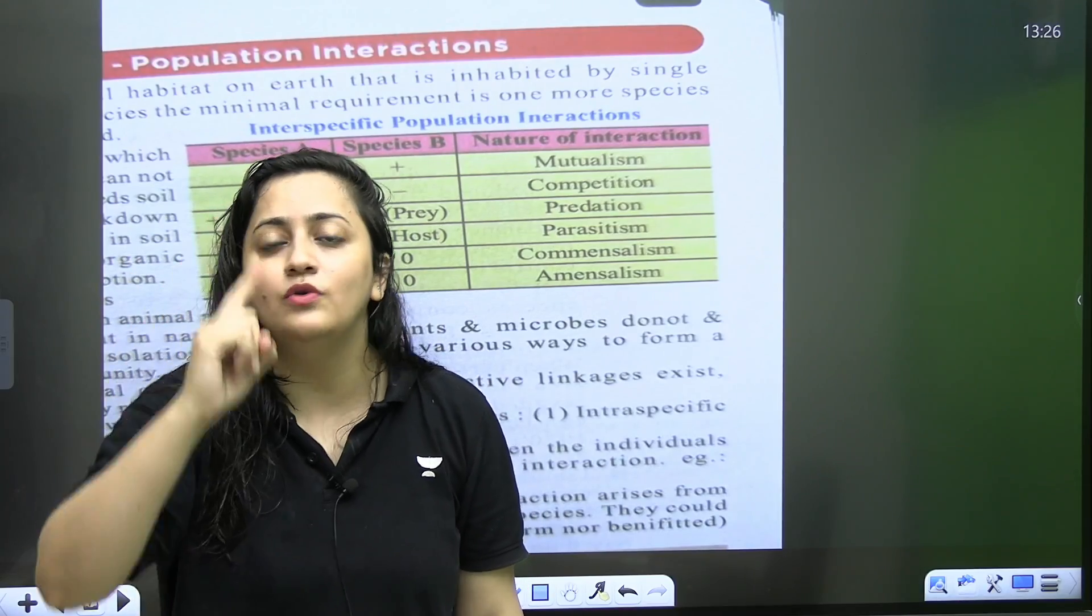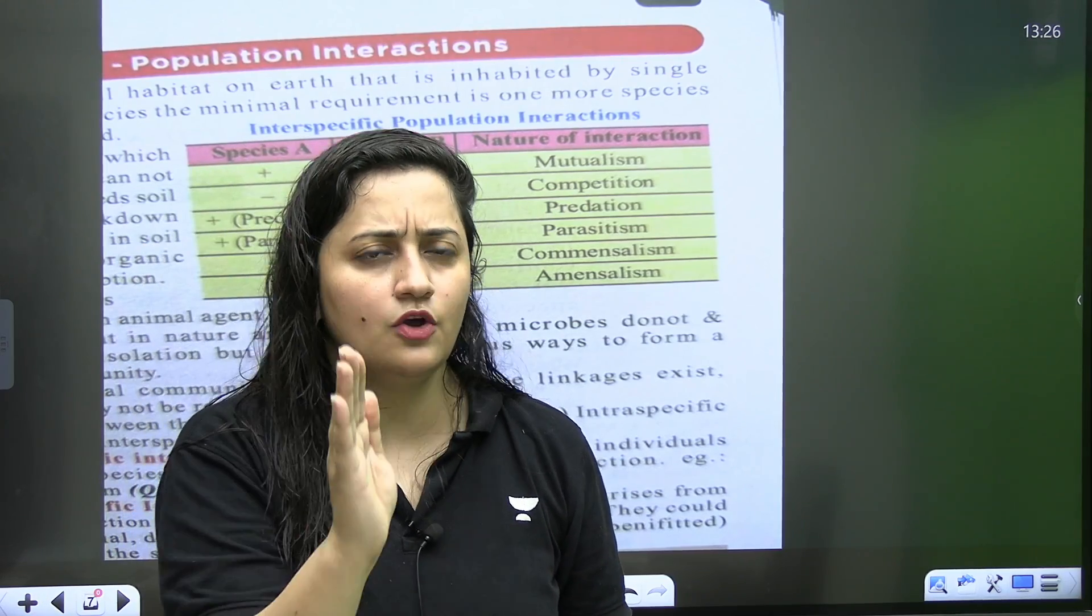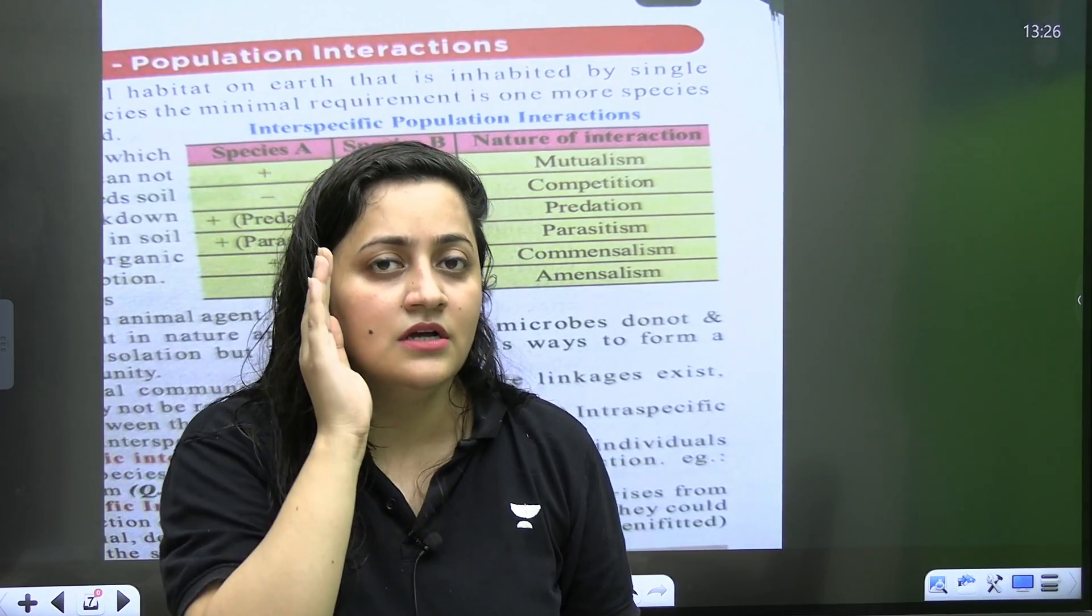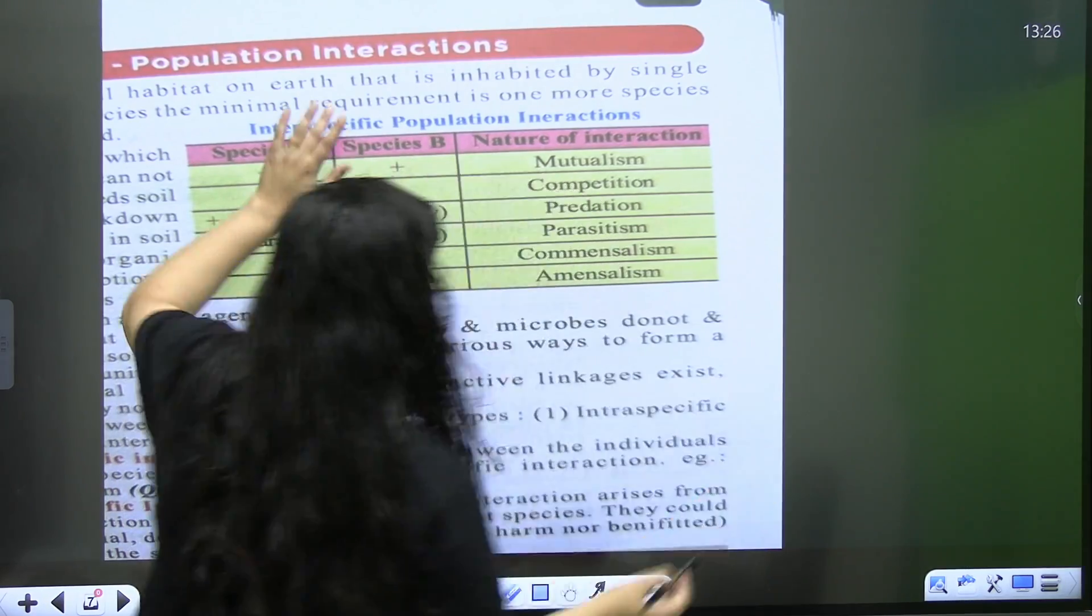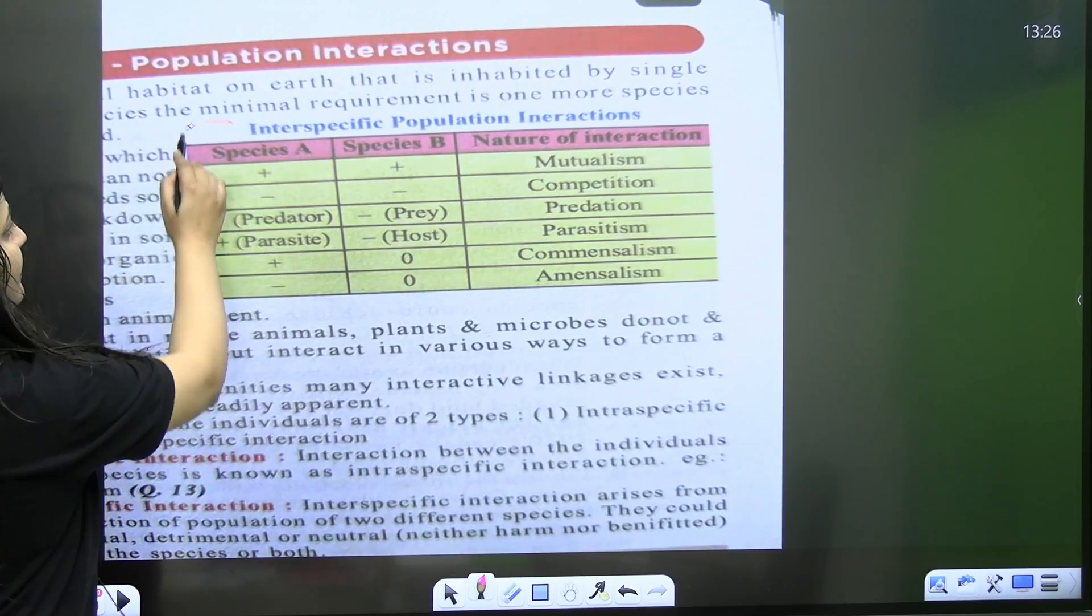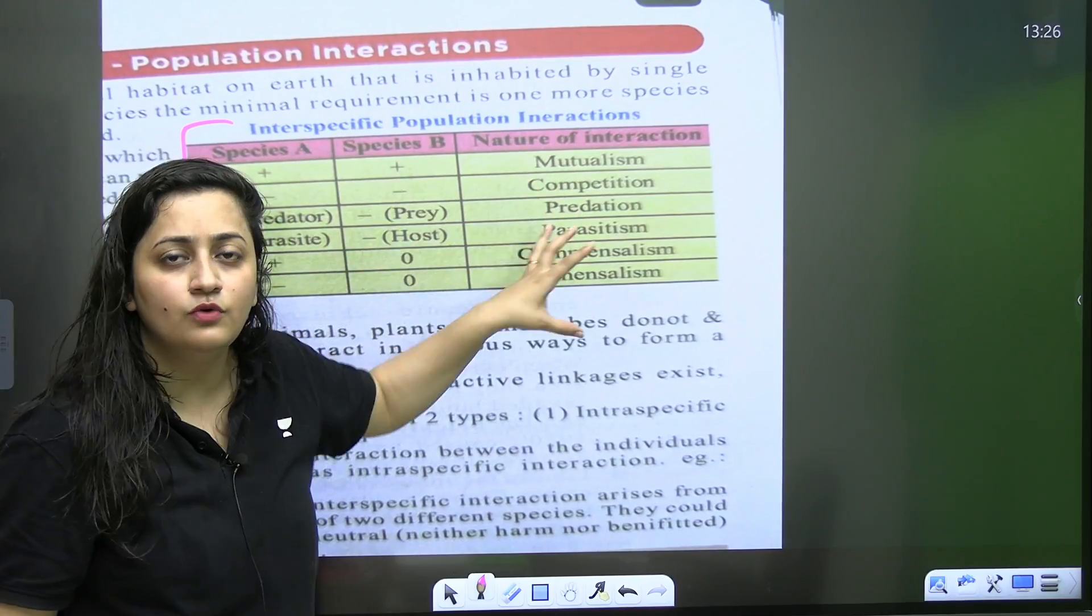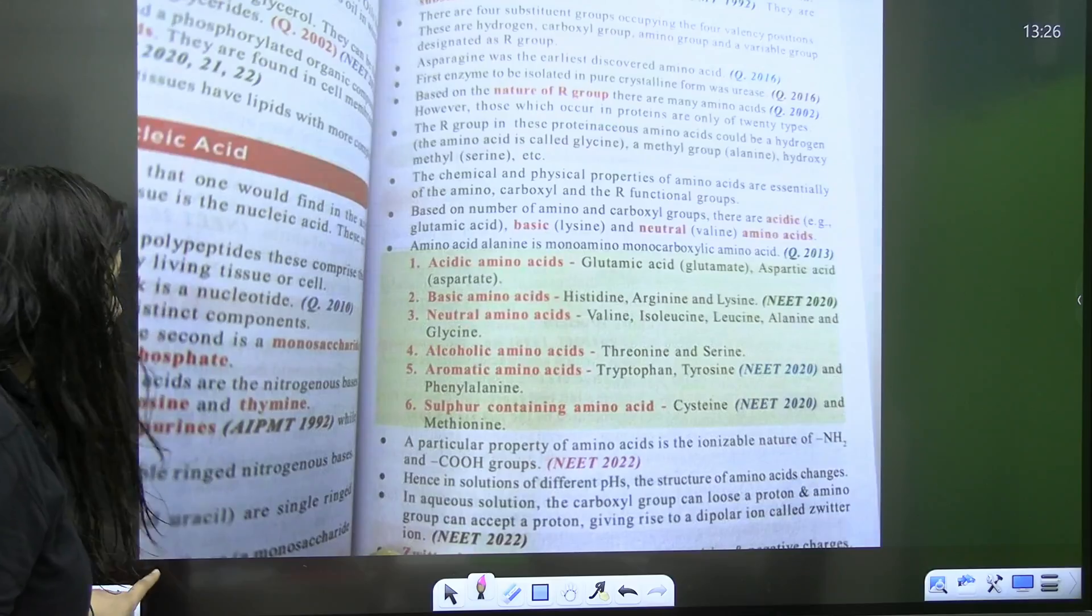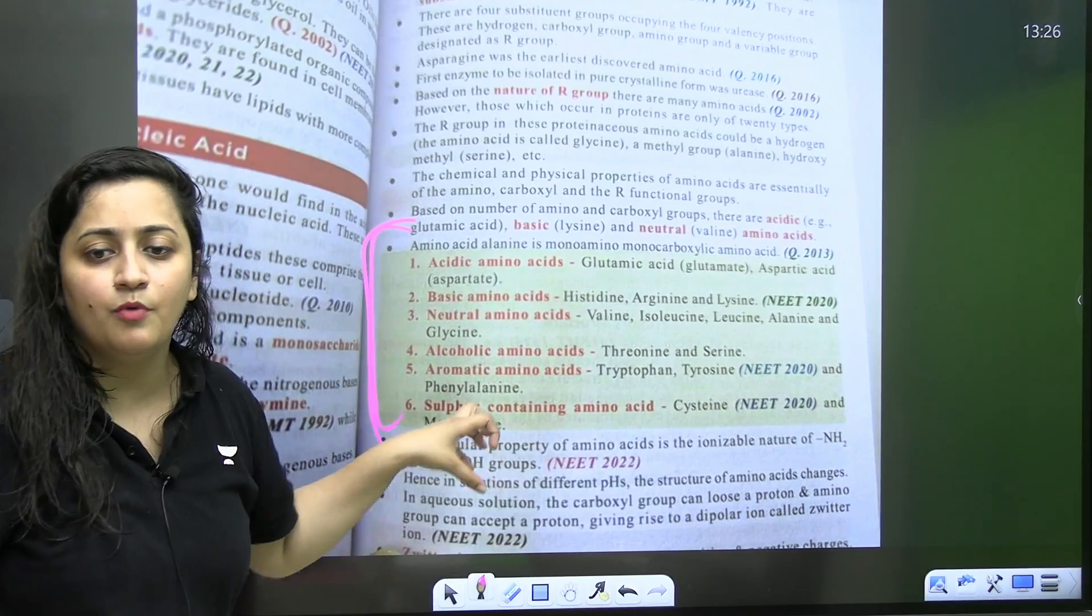And whenever you are reading NCRT, consider yourself as an examiner and ask questions from yourself. See, this is also a book. See, this table is given in the NCRT as well. It is from NCRT. So, you have to include such tables. You have to include such points, such bulleted points in your notes. That's why I'm adding this.